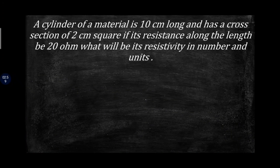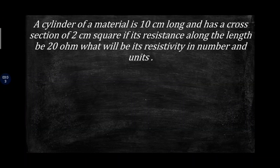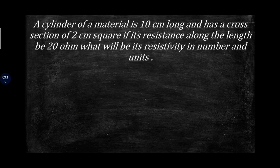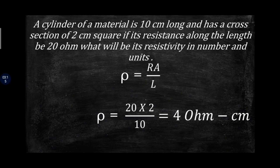A cylinder of a material is 10 cm long. You are given the length, cross-section of 2 cm, and resistance of 20 ohm. You can easily calculate resistivity in this case — try to solve this question by yourself. The answer will be 4 ohm centimeter.